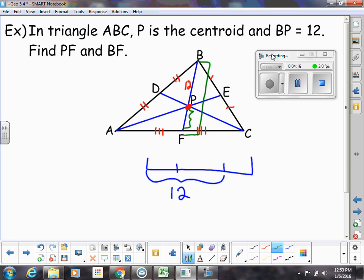Well, if two of them is 12, then just one of them would be six, half of that. So each of these thirds has to be six. So that tells me that PF is only one of those thirds. So that would be six. And then the whole thing, BF, would be all three of those thirds. So that would be six plus six plus six, which is 18.